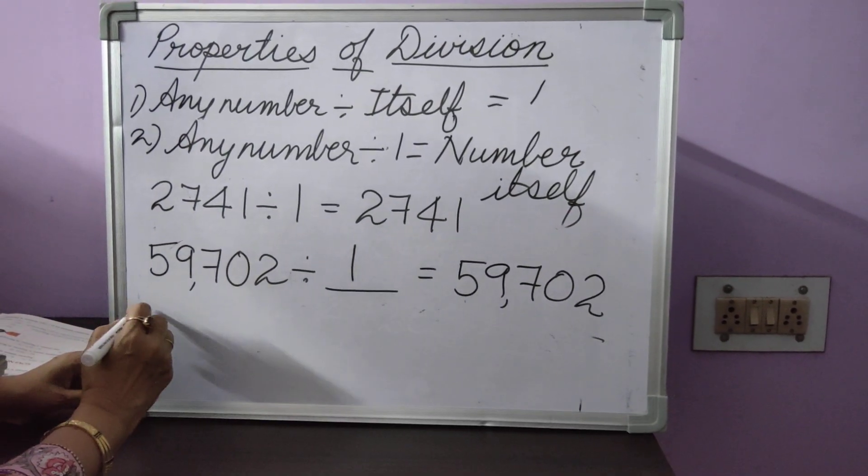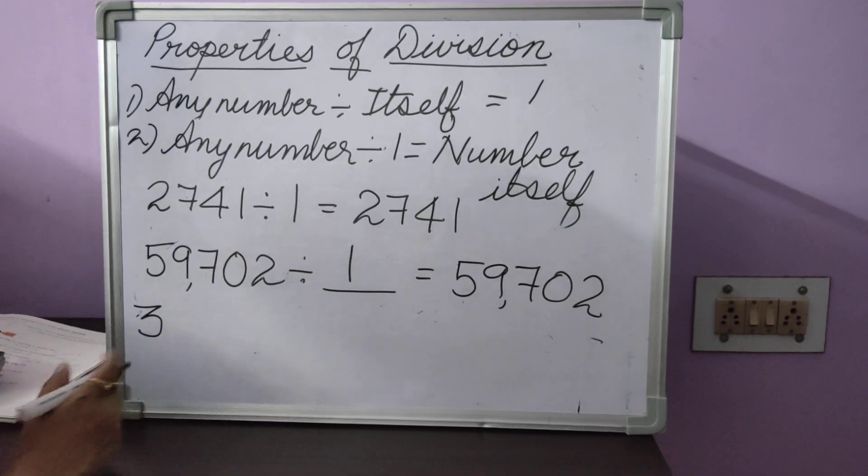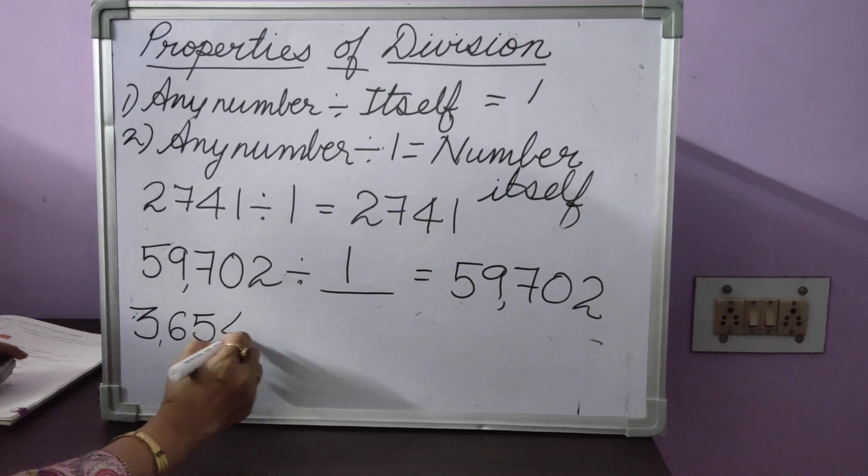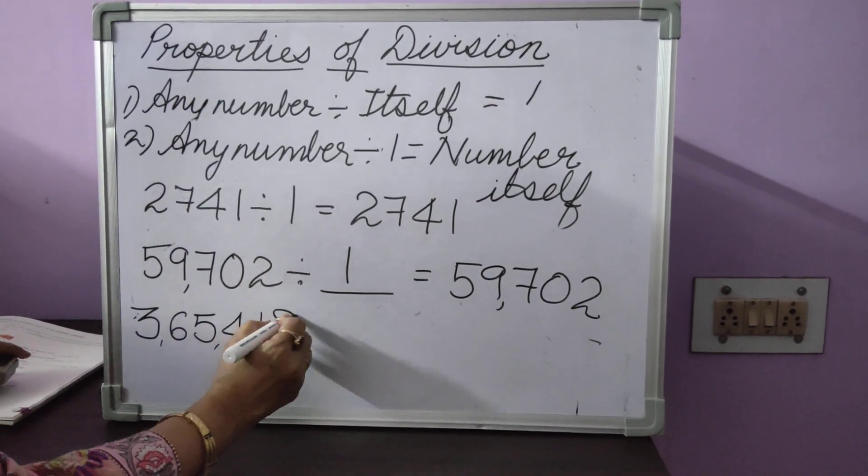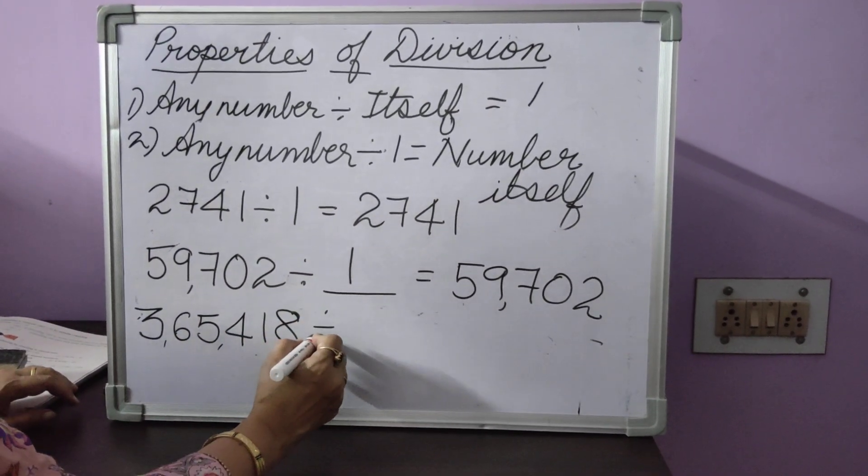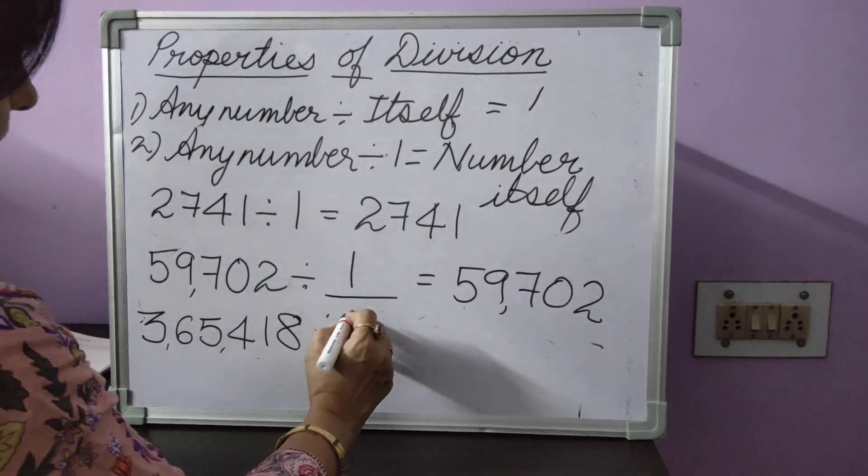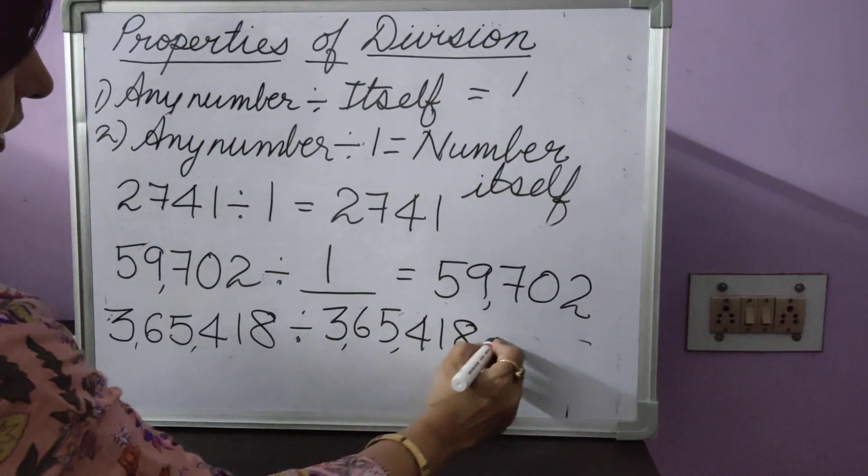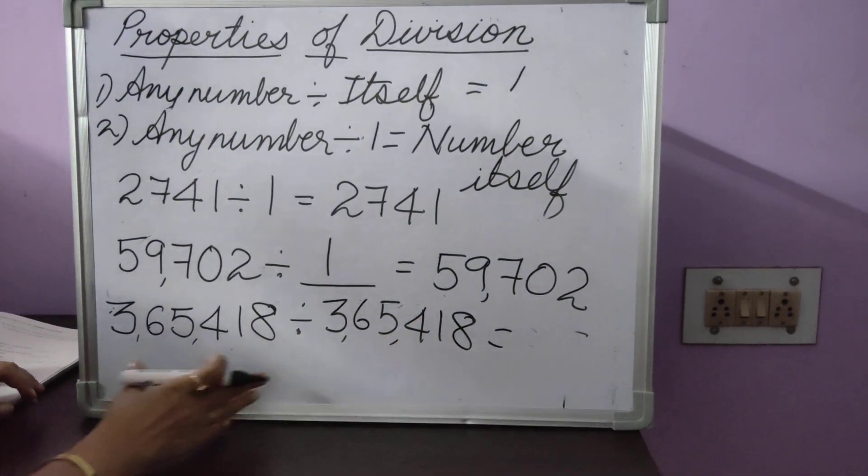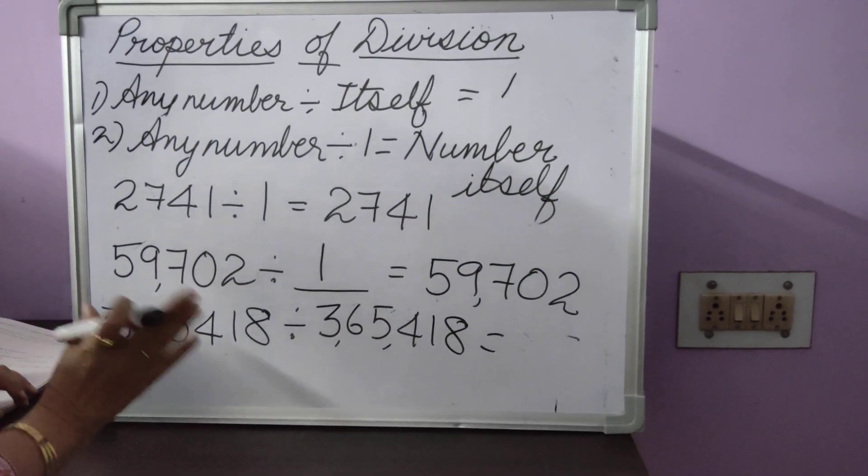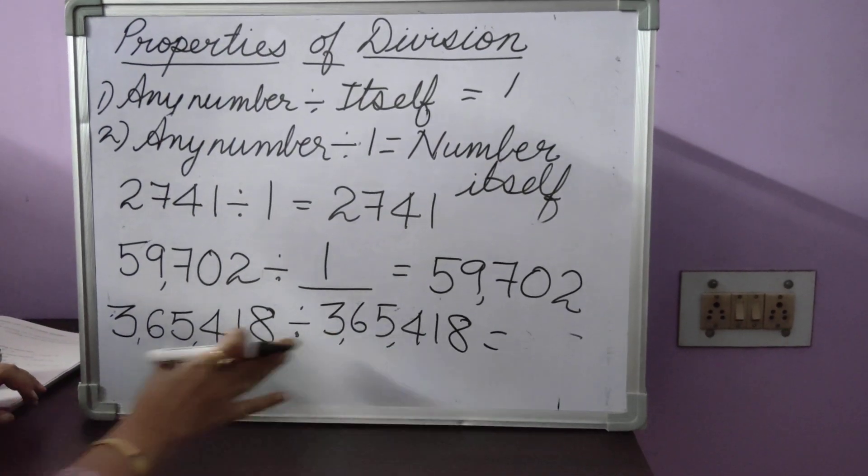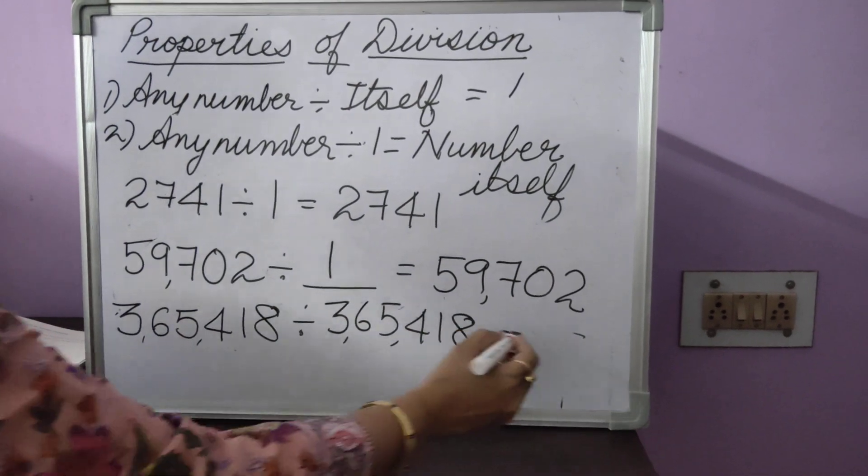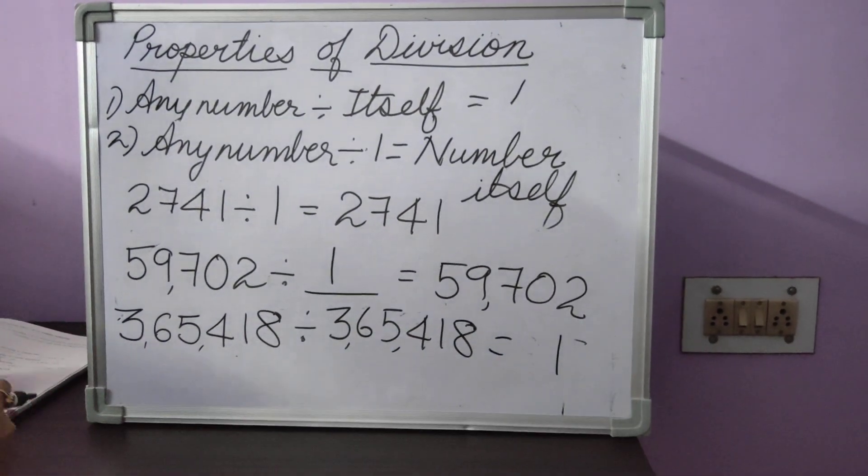Again, one more example. 3,65,418 divided by, again 3,65,418. Again, big numbers I have taken this time to show you howsoever big the number is, if it is exactly the same number being divided by the same number, the answer will always be 1.